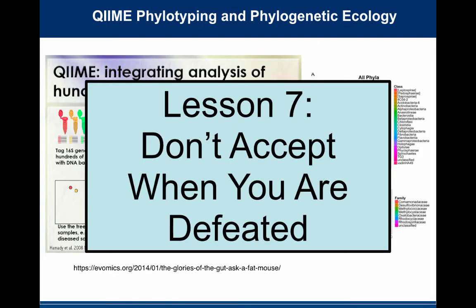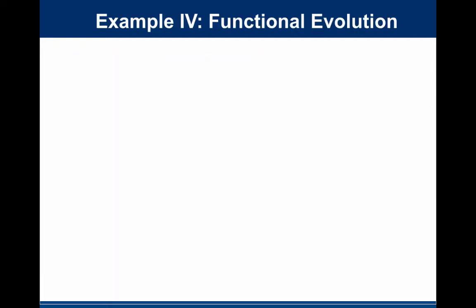Even though QIIME defeated us completely, we refused to accept defeat and are still developing PhyloSift as a protein marker-based approach. It's also different in that, for the phylogenetics people, it's a Bayesian approach as opposed to other methods — so you never fully accept defeat. That's just giving you a taste of how we can use phylogeny to analyze sequence data, focusing on the phylogeny of taxa, species, genera, orders, and so on.